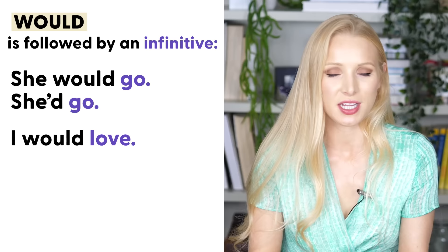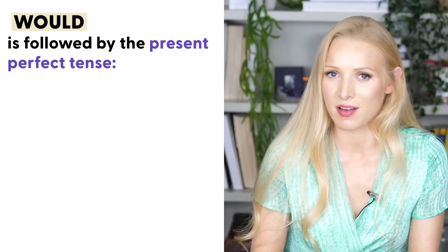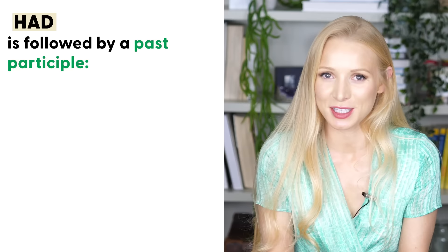So how do we know if contractions like 'I'd' and 'we'd' represent had or would? Here are some rules: would is followed by an infinitive — 'she would go', 'I would love', 'she'd go', 'I'd love'. Would can also be followed by the present perfect tense — 'they'd have slept', 'I'd have given'. With had, a past participle follows — 'I'd eaten' means 'I had eaten', 'he'd gotten' means 'he had gotten'.